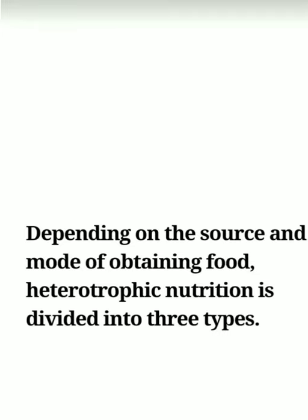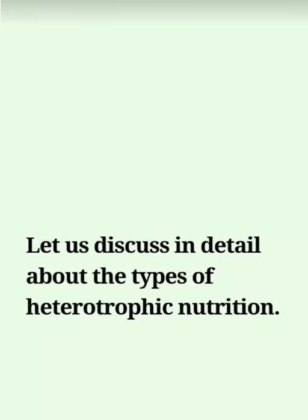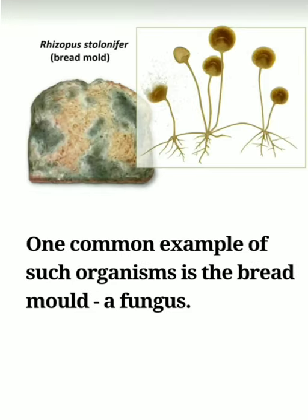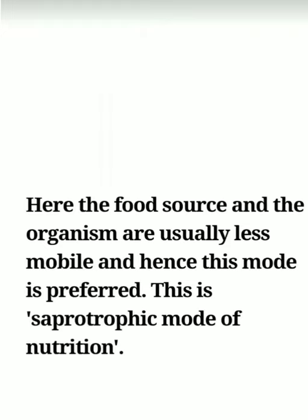The three types are holozoic nutrition, saprophytic nutrition, and parasitic nutrition. Some organisms break down food outside the body and then absorb it — for example, fungi. These organisms are called saprophytes because they first digest the food and then ingest it. Most saprophytic organisms are less mobile, meaning they do not move from place to place, so they find their food source where they are living.